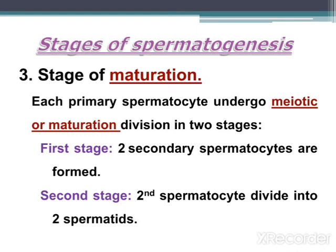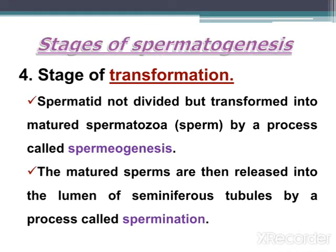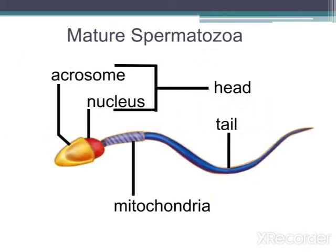Each primary spermatocyte undergoes meiotic division in two stages: first, two secondary spermatocytes are formed; second, the secondary spermatocytes divide into two spermatids. In the fourth stage — transformation — spermatids are not divided but transformed into mature spermatozoa by a process called spermiogenesis. The mature sperms are then released into the lumen of seminiferous tubules by a process called spermiation.